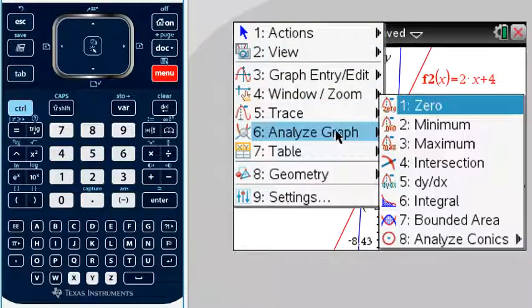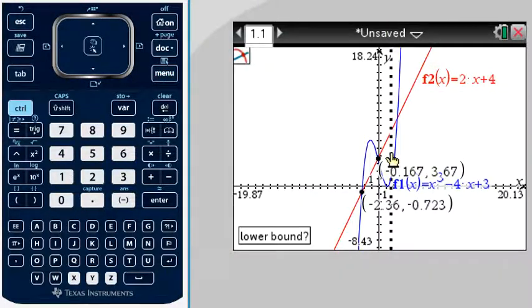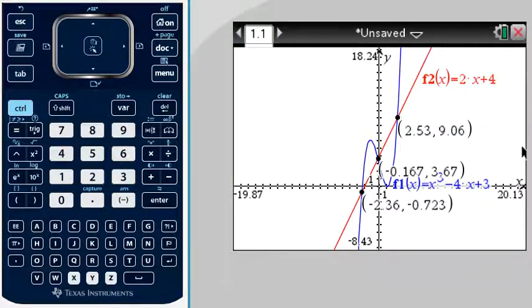Okay, and last one. And there's our final point of intersection. 2.53, 9.06.